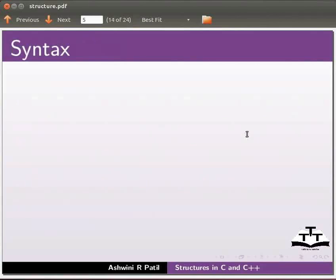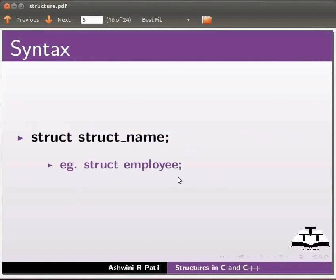Now we will see the syntax to declare a structure. Here the keyword struct tells the compiler that a structure is declared. Struct name is the name of the structure. Example: struct employee. You can give any name.